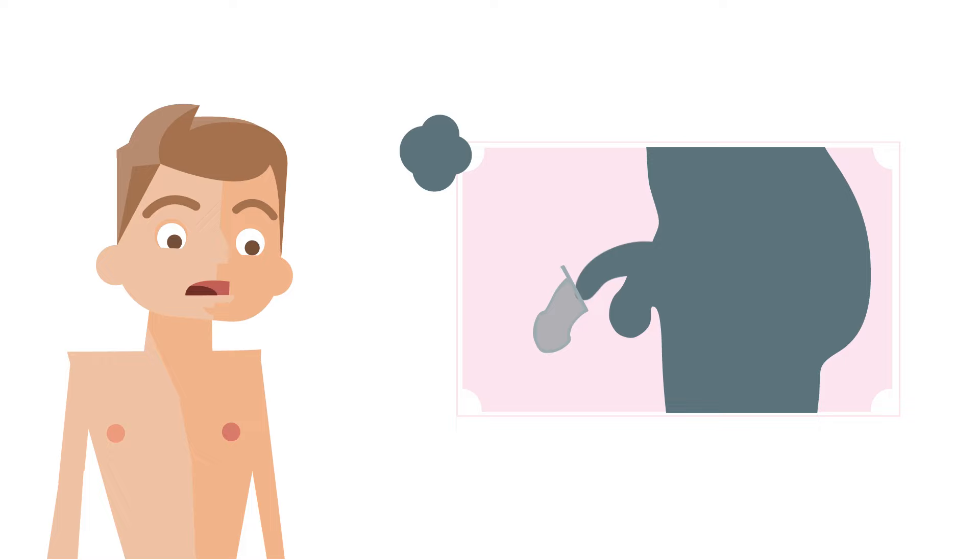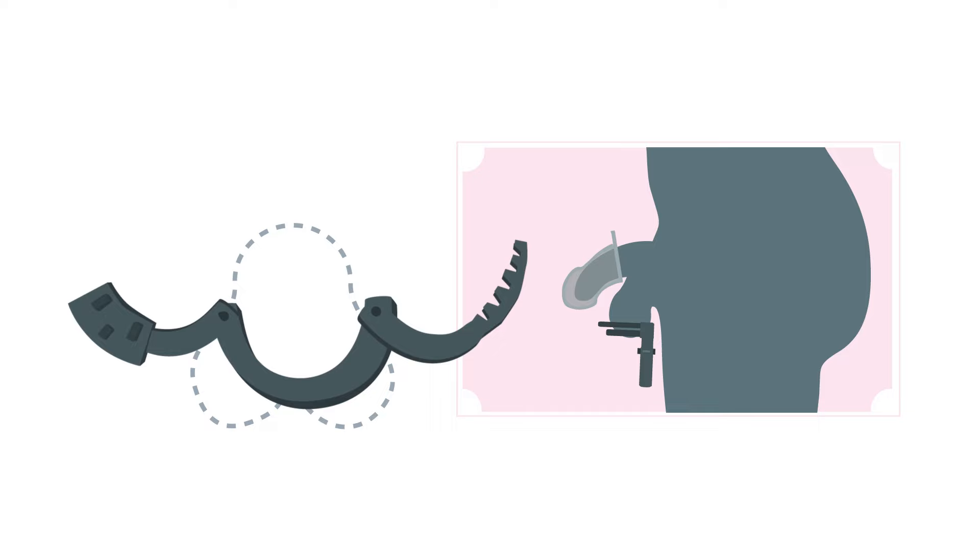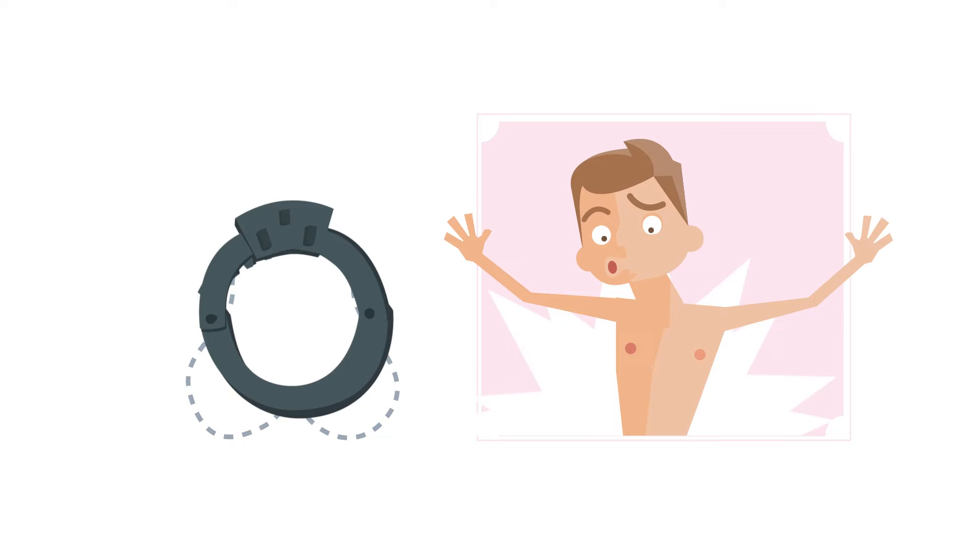Next, you'll put the clamp on the shaft under the scrotum and adjust it to the correct width. Fix the clasp so it does not slip down, but also nothing is squeezed.